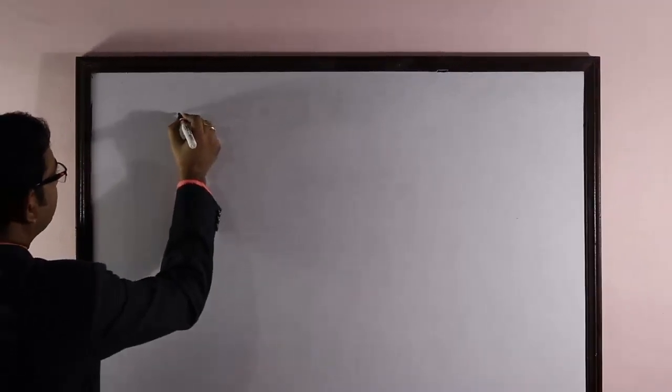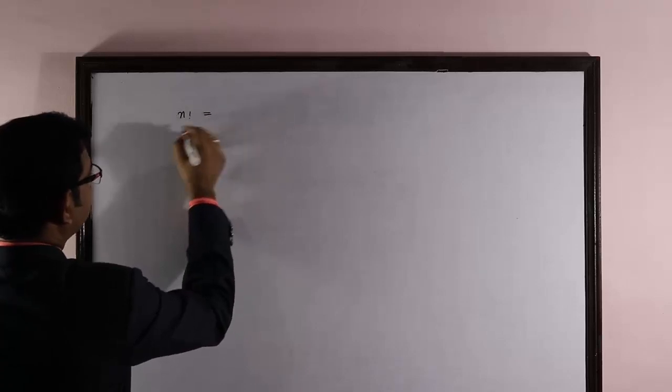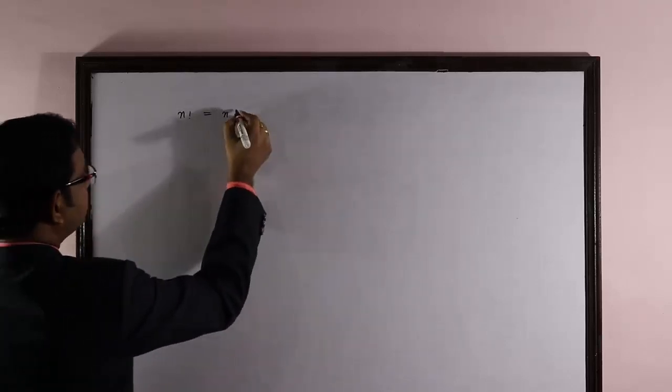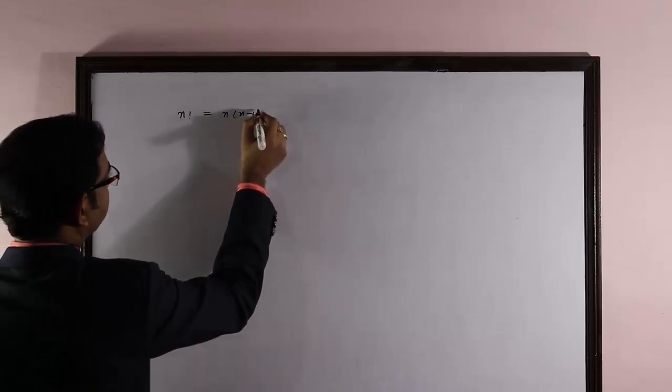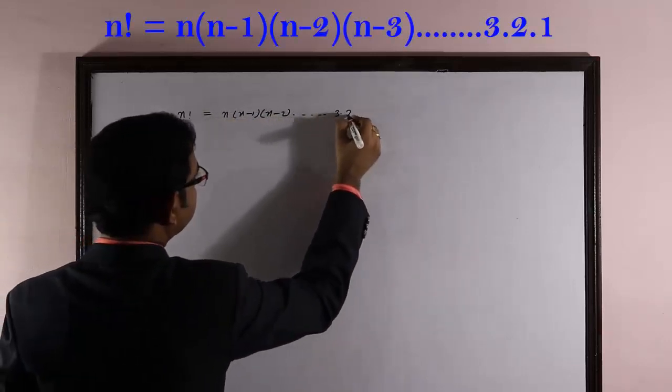Now as you already know, as per the definition of factorial, n factorial is defined as n, n-1, n-2, ... 3, 2, 1.